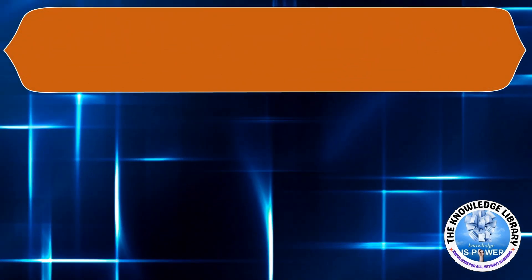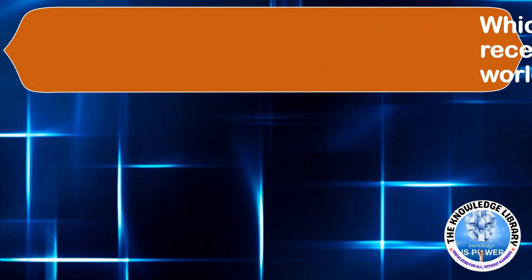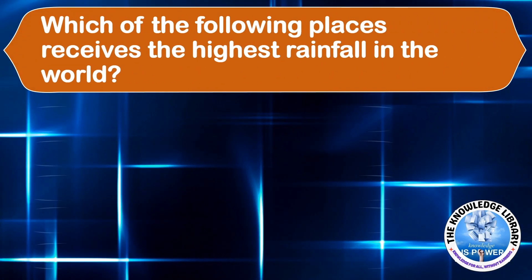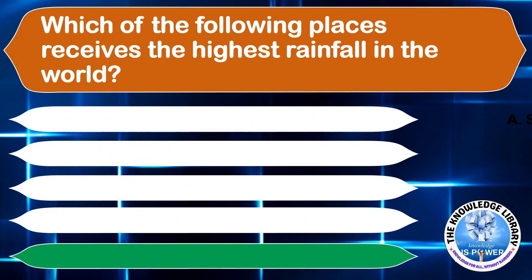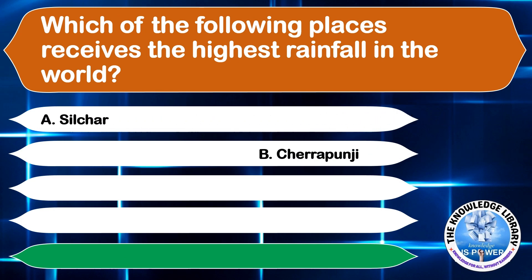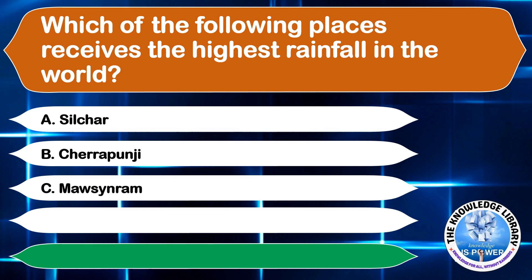Which of the following places receives the highest rainfall in the world? A. Silchar, B. Cherrapunji, C. Mawsynram, or D. Guwahati. The correct answer is option C, Mawsynram.